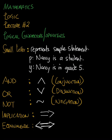Before we go ahead with logical connectors and operators, let's first take a look at this. With any simple statement, it is represented by a small letter. For example, the small letter p can represent a statement: Nancy is a student. Or the small letter y can represent a statement: Nancy is in grade 5.